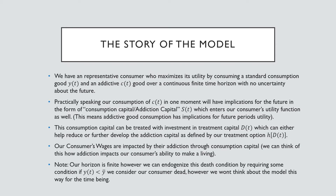The story of this model is as follows. We have a representative consumer who maximizes its utility by consuming a standard consumption good, YT, and an addictive good, CT, over a continuous finite time horizon with no uncertainty about the future. Practically speaking, our consumption of CT in one moment will have implications for the future period's utility in the form of consumption capital or addiction capital, ST, which enters our consumer's utility function as well. This means that addictive good consumption will have implications for the future period's utility.